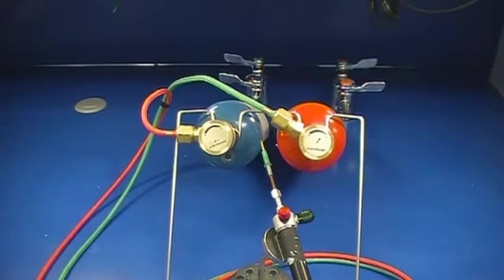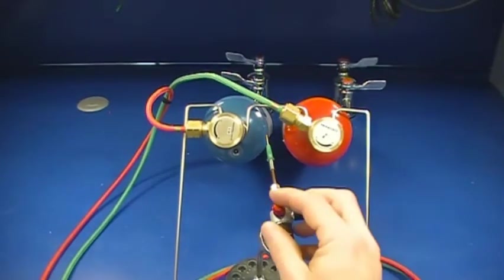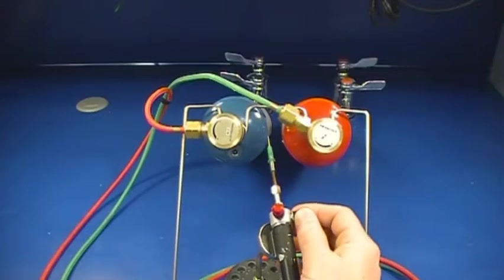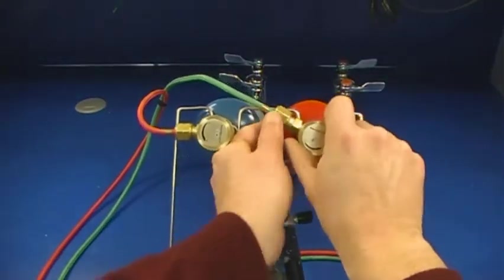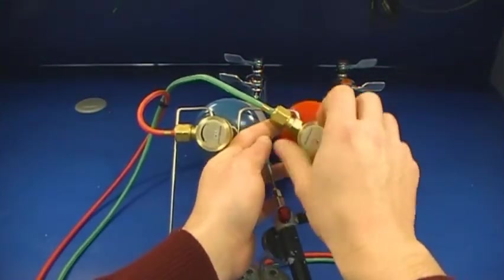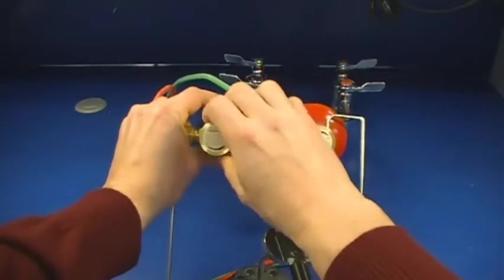Once the torch is assembled, the gas lines need to be purged. Start by making sure valves on torch are in off position. Turn torch valves clockwise to confirm off position. Then turn on gas regulators at cylinders by turning dials counterclockwise towards on position.